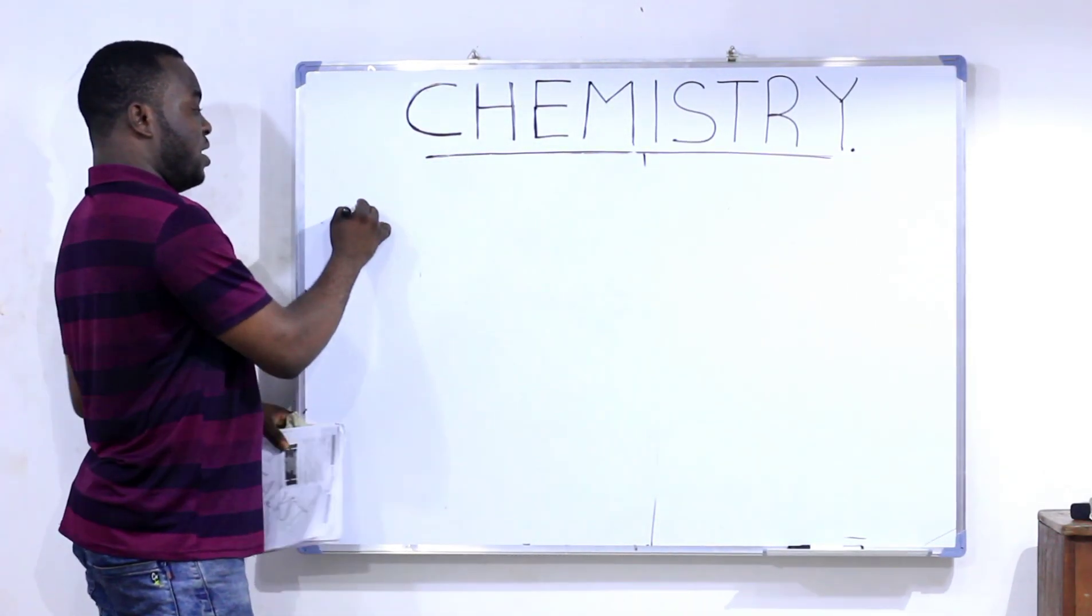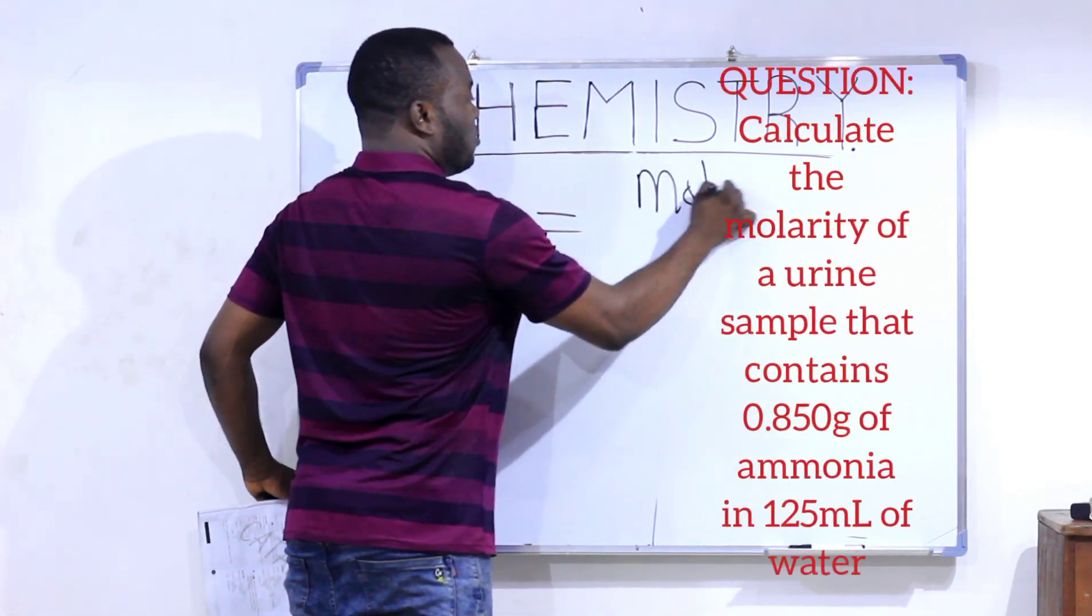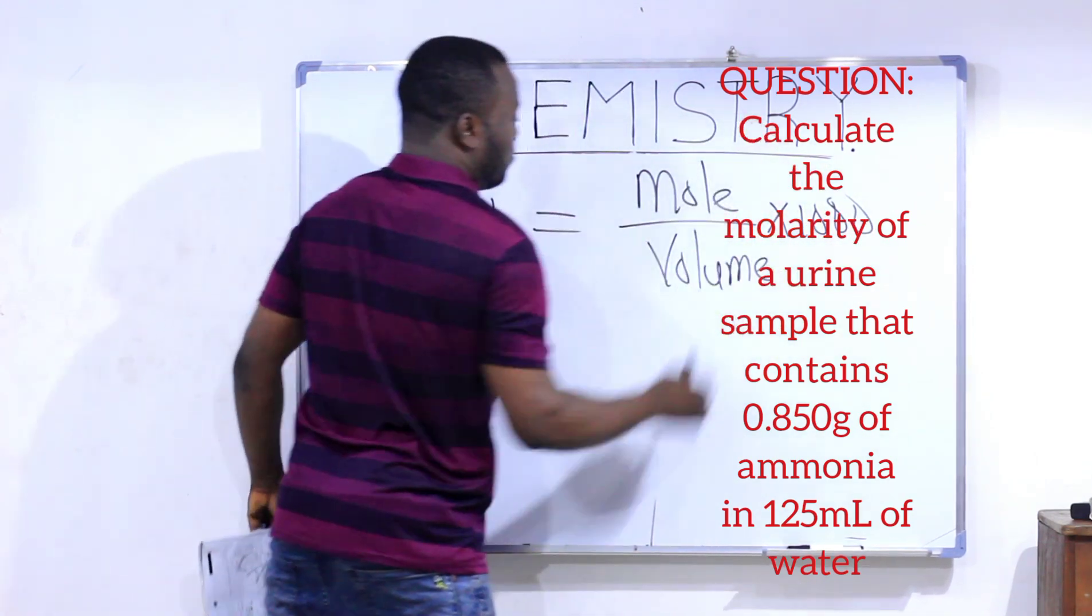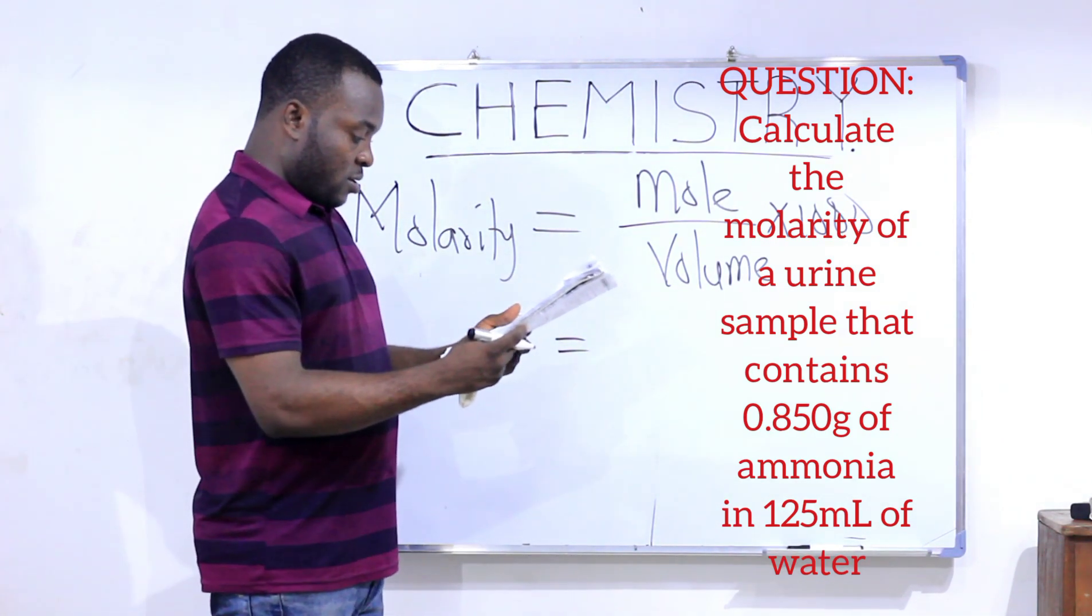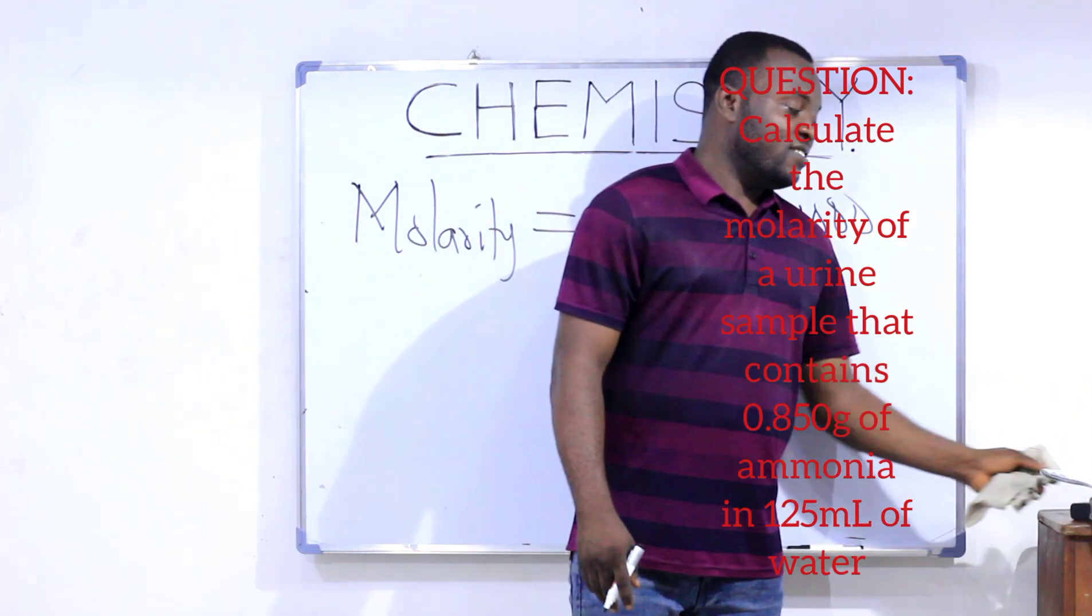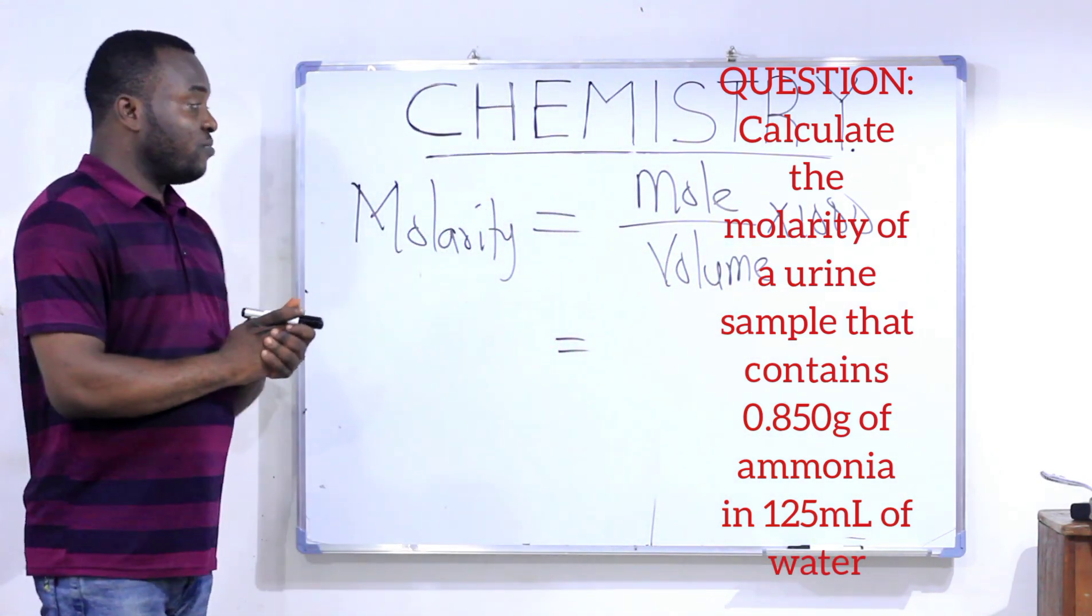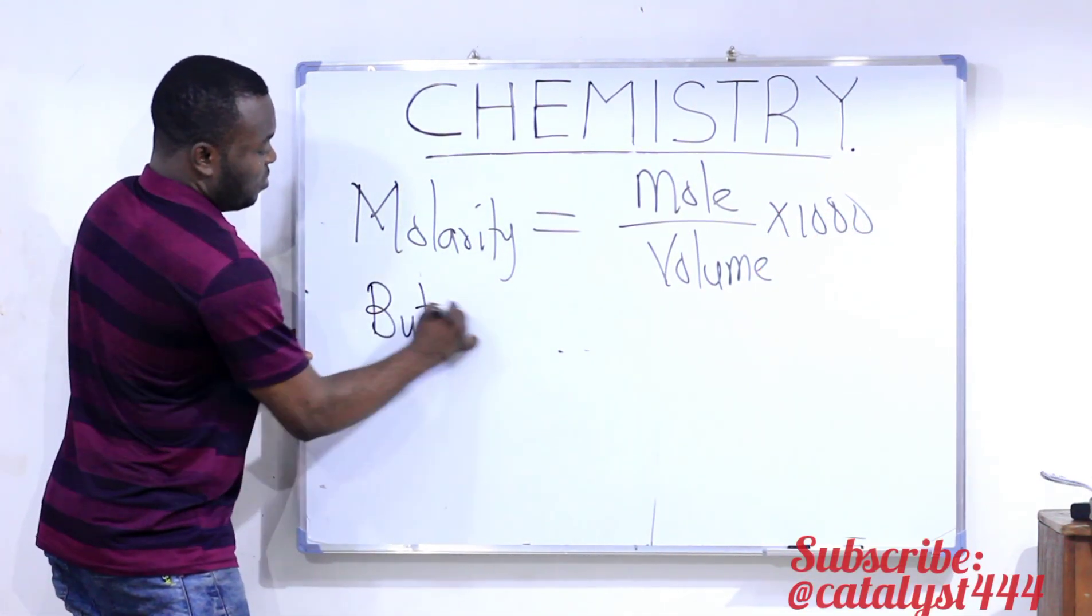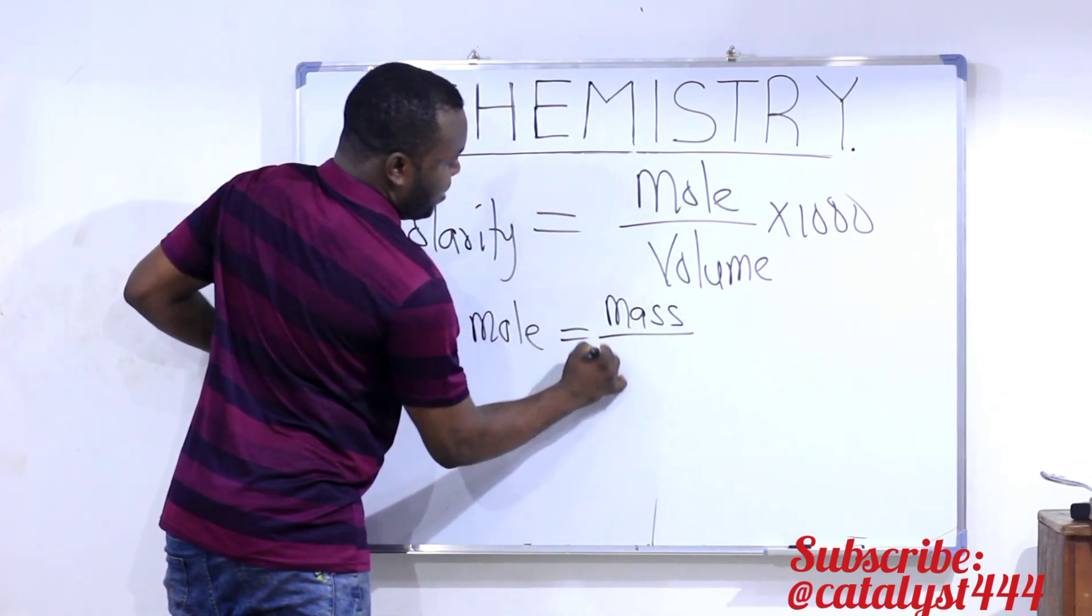So using Formula A, molarity is equal to the mole given to us divided by the volume multiplied by 1,000. And that will be, the mole given to us in the question is, the mole is not given. What they gave us is the mass. And the mass is 0.85 grams. They didn't give us the mole. So we are going to find mole from the mass given. Remember, mole is equal to mass divided by the molar mass.